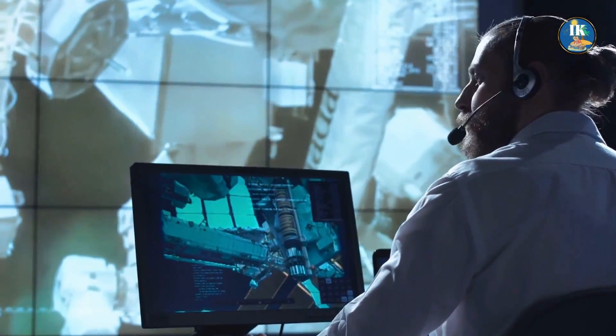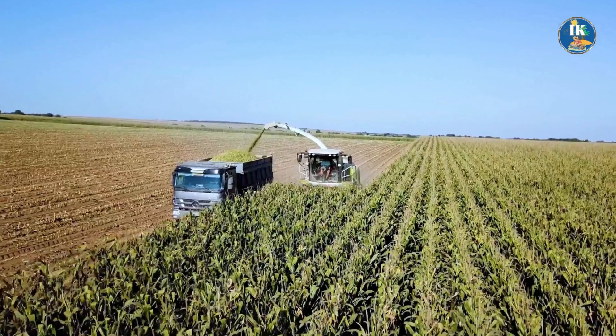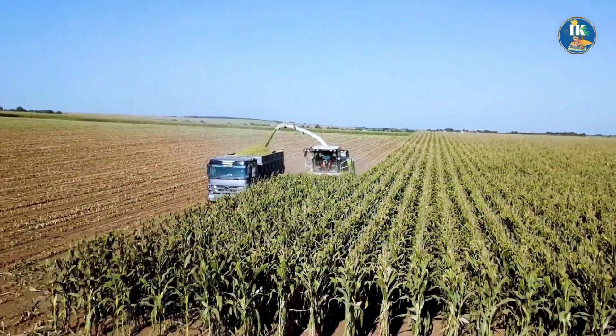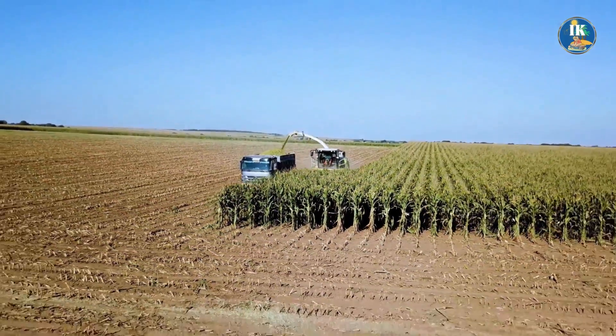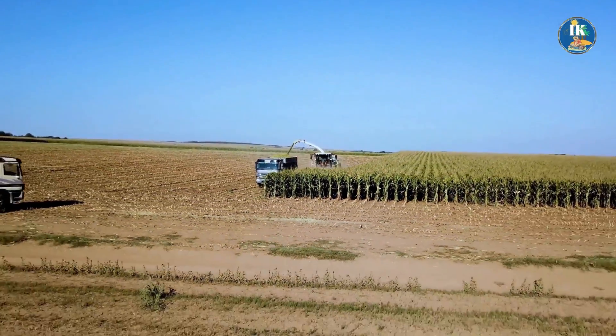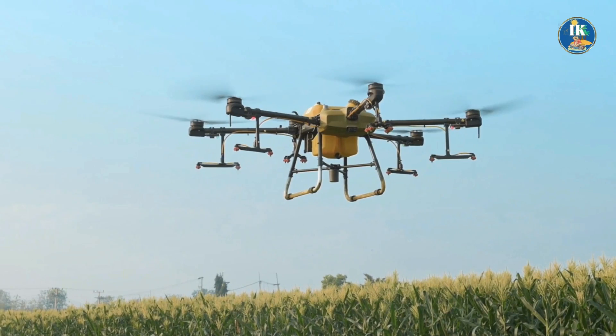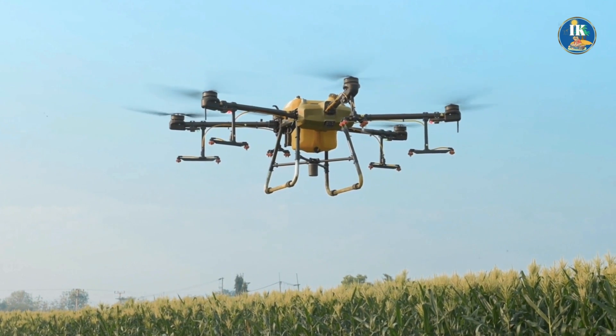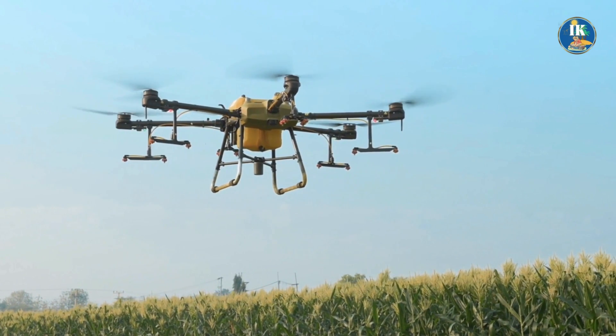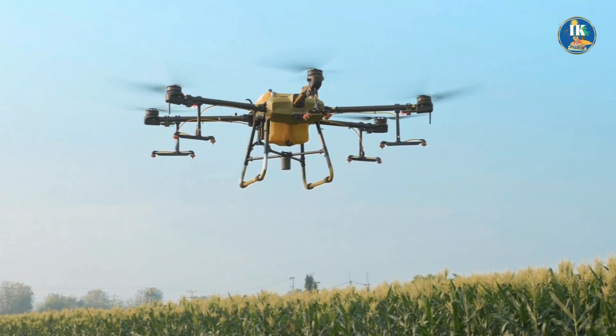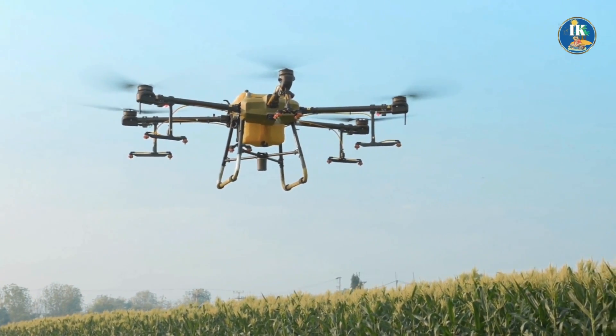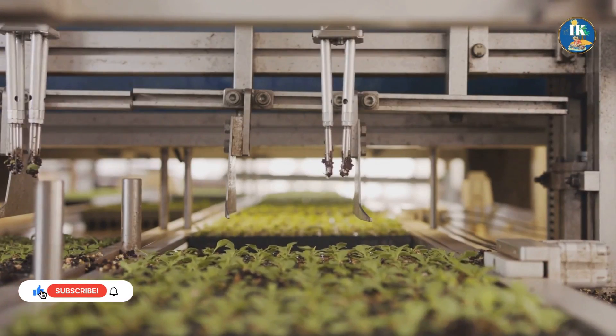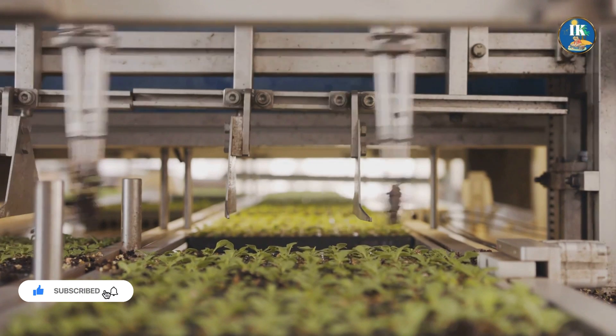Finally, in agriculture, automation is being used to increase crop yields and reduce labor costs. For example, robots are being used to harvest crops, while drones are being used to monitor crops and detect potential issues such as pests or disease. These technologies are helping to ensure that we can feed a growing global population while minimizing the impact on the environment.